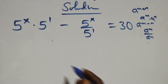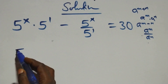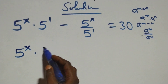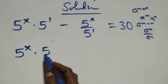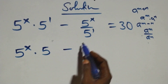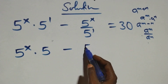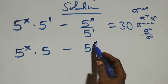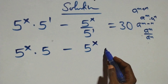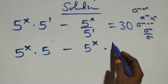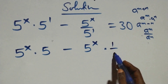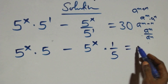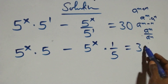The next step: we can write it as 5 raised to power x times 5 raised to power 1, and that's 5. Then minus here we can write it as 5 raised to power x times 5 to power 1 over 5 raised to power 1, which is 1 over 5. Then equals 30.